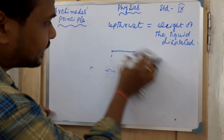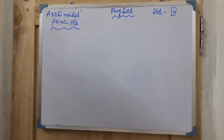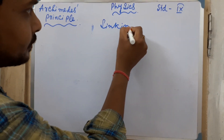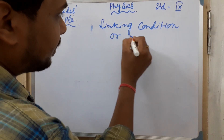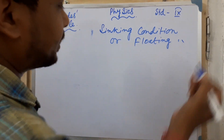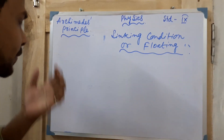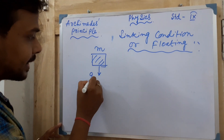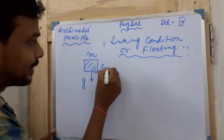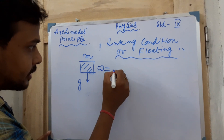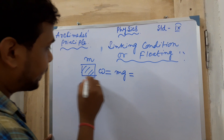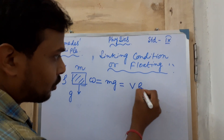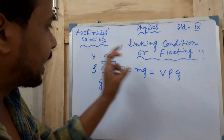Next, we look at how sinking and floating conditions depend on the density of the body and the liquid. Any body with mass m acted on by gravity g has a true weight in air equal to m×g, or written in terms of density: W = V×ρ×g, where V is the volume of the body and ρ is the density of the body.